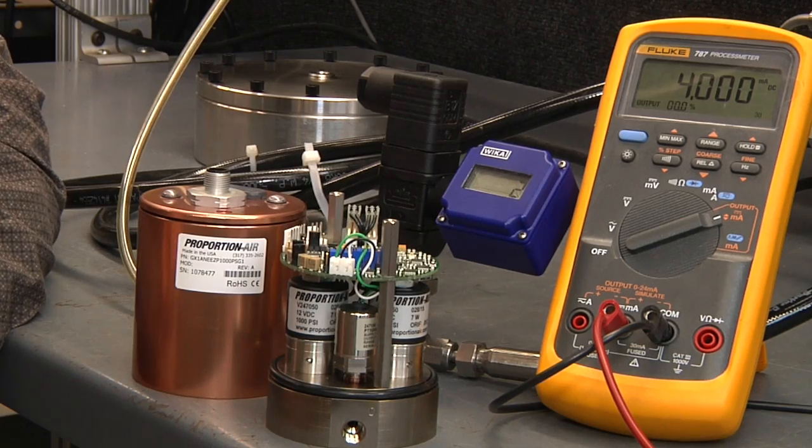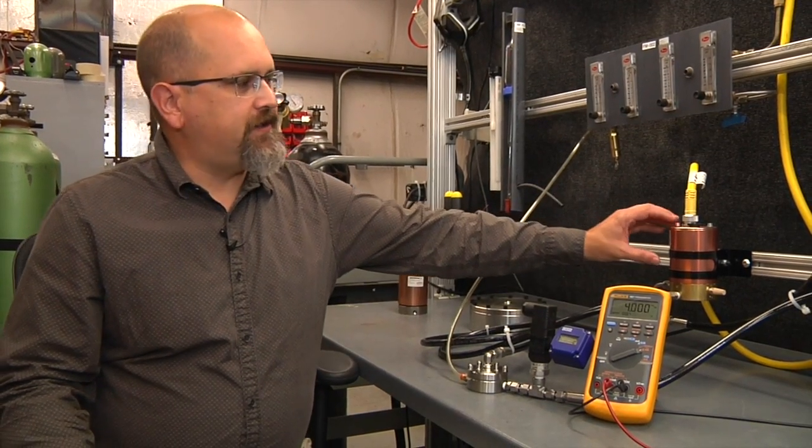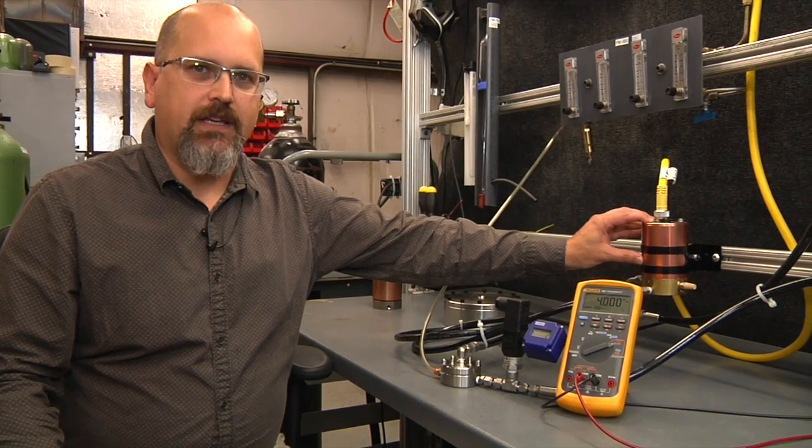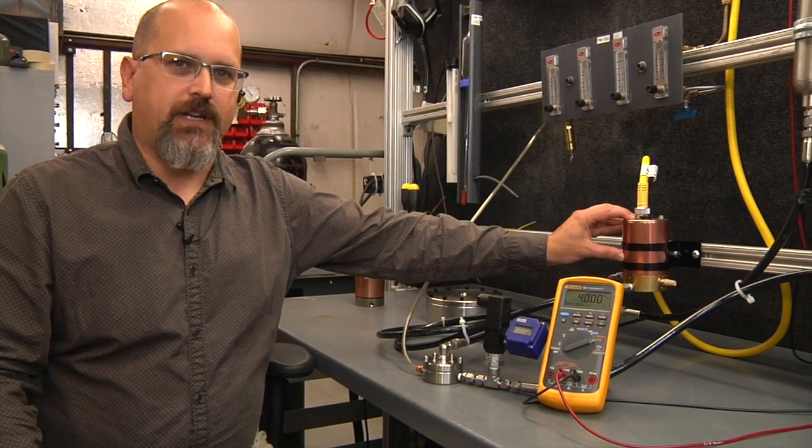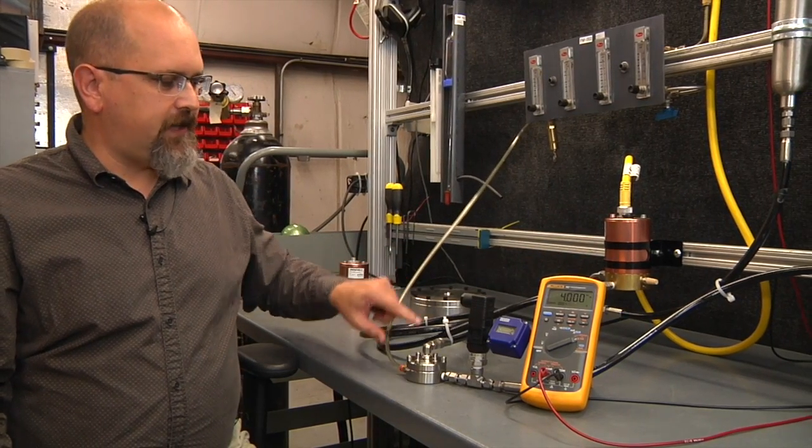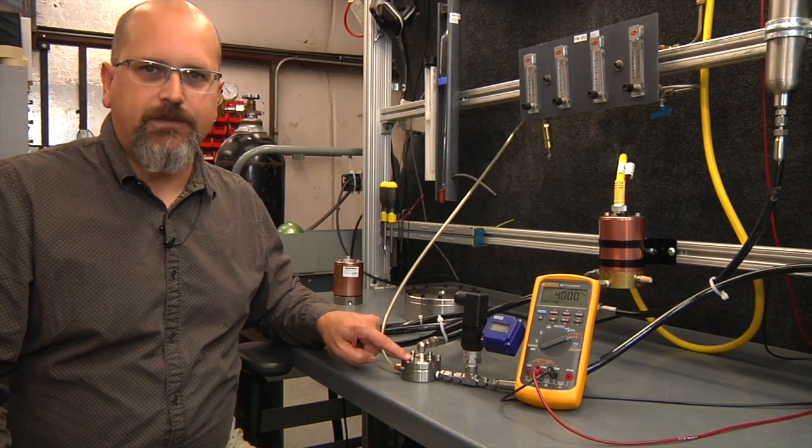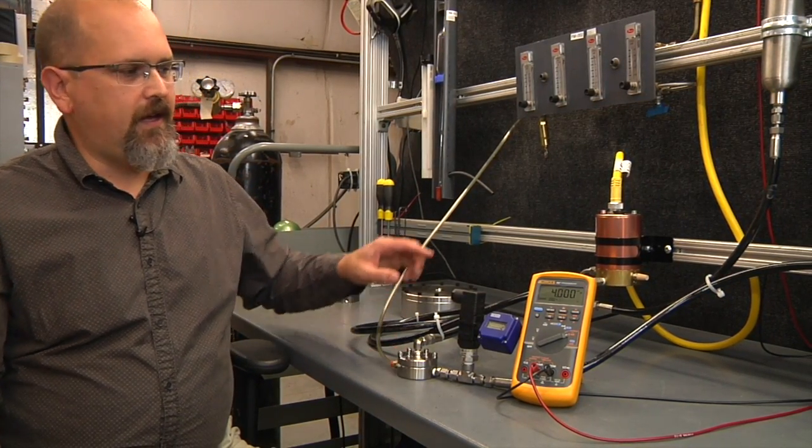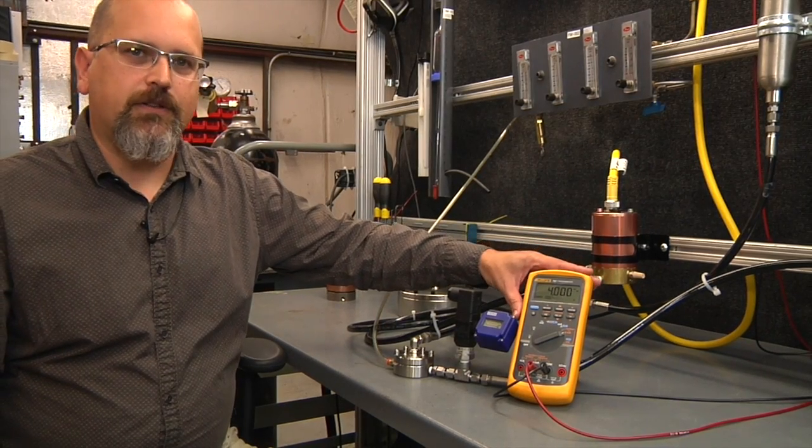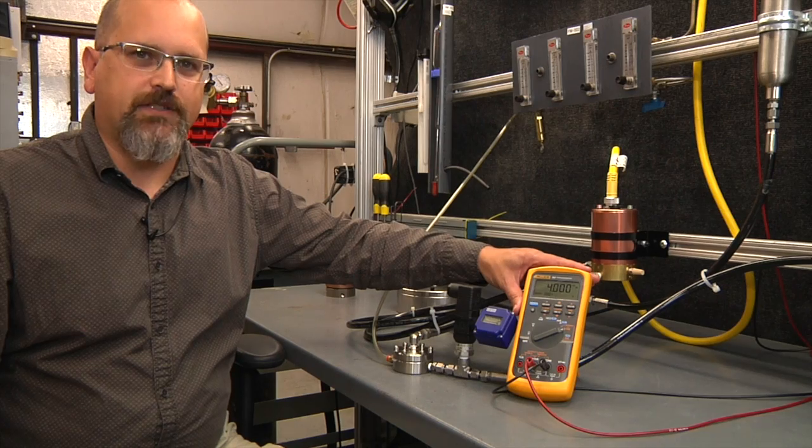For our demonstration today, we'll be using a 0 to 1000 PSI GX Series from Proportion Air to provide a 0 to 1000 PSI pilot signal to this precision Equilibar LF Series back pressure regulator. We'll provide a command signal to the GX using this Fluke 787 process meter.